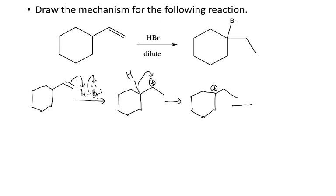If that hydrogen moves over in a hydride shift, that produces this tertiary carbocation. Now when my bromide comes in and does the nucleophilic attack, it will add here.